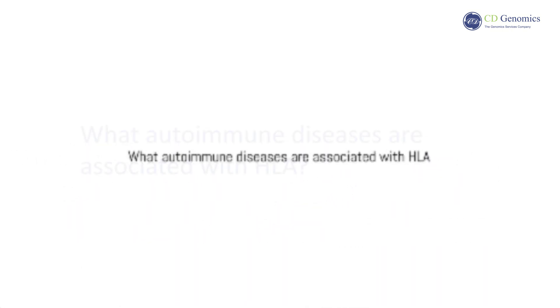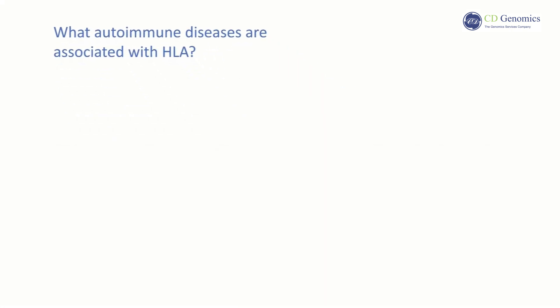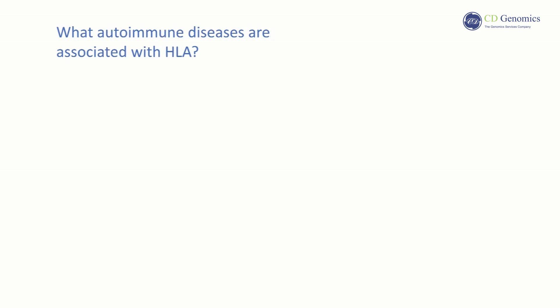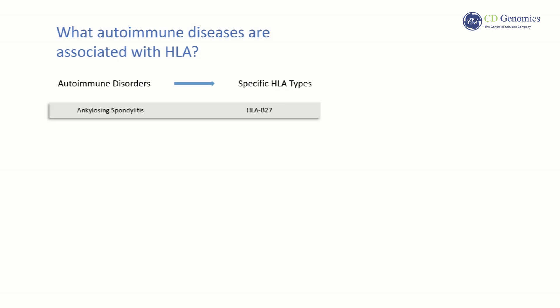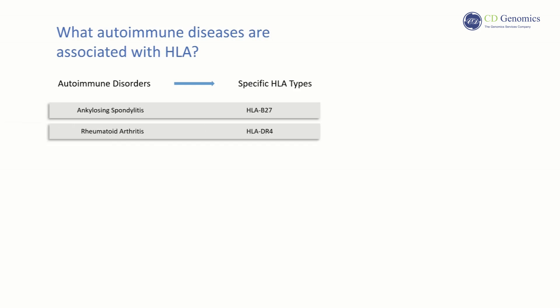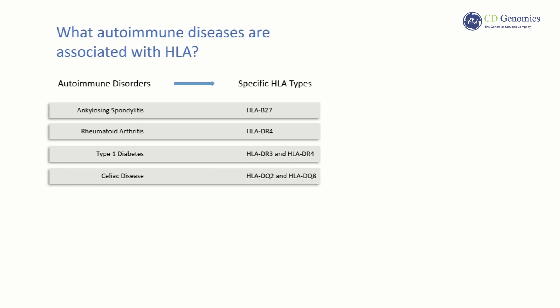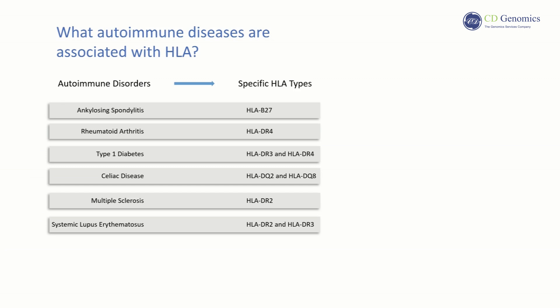So which autoimmune diseases are associated with HLA? Many autoimmune disorders are closely linked to specific HLA types. For instance, an association exists between ankylosing spondylitis and HLA-B27, while rheumatoid arthritis is associated with HLA-DR4. Type 1 diabetes typically correlates with HLA-DR3 and HLA-DR4, celiac disease with HLA-DQ2 and HLA-DQ8. Multiple sclerosis is linked to HLA-DR2, and both HLA-DR2 and HLA-DR3 are associated with systemic lupus erythematosus.